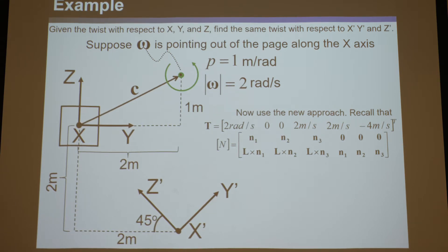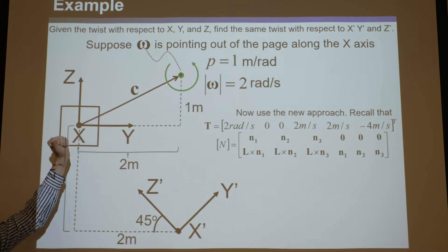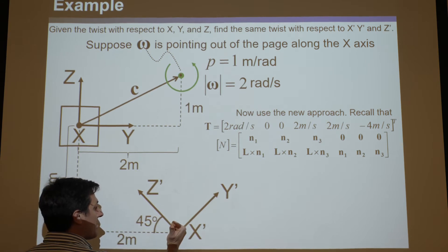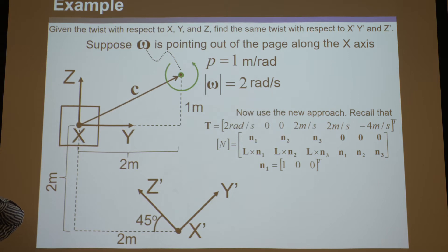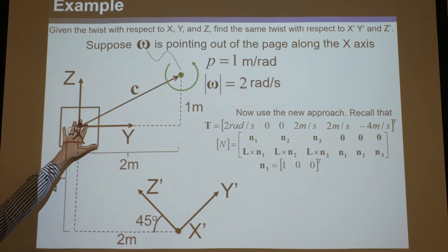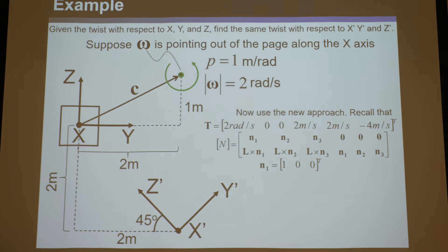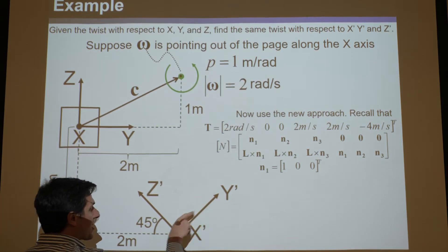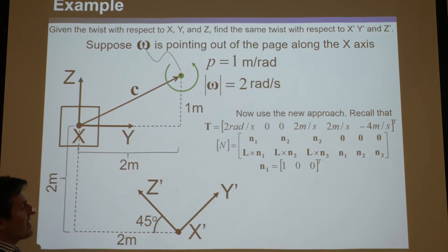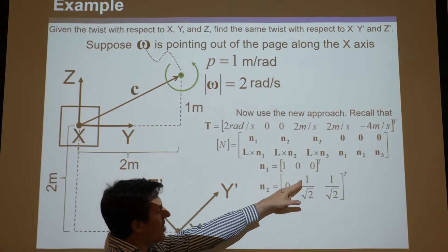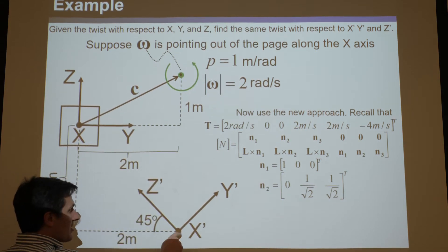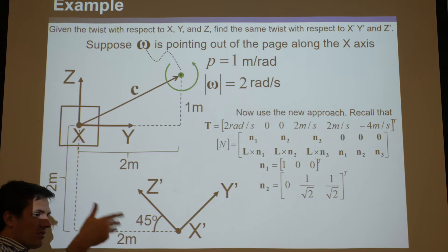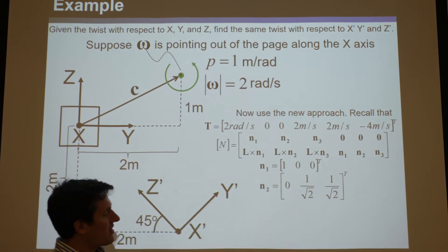Let's find n1 first. Remember, they're all defined with respect to the old coordinate system. n1 has to point in the new x-prime direction defined with respect to the old system, so it's [1, 0, 0] and its magnitude is 1. Now n2 has to point in the new y-prime direction with respect to the old system and have magnitude 1, so it's [0, 1/√2, 1/√2]. You might have been tempted to call it [0, 1, 1], but that would have magnitude √2, not 1.